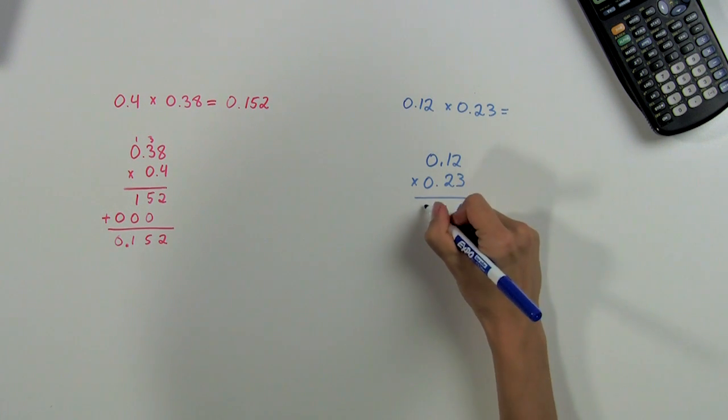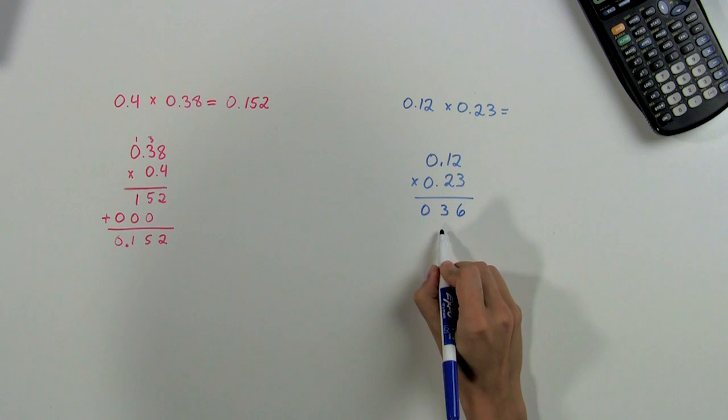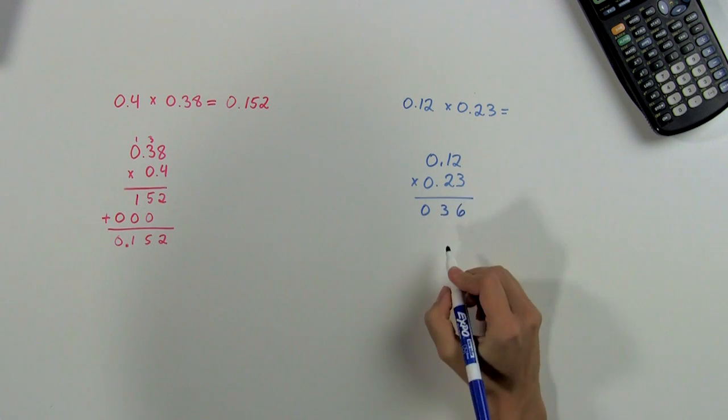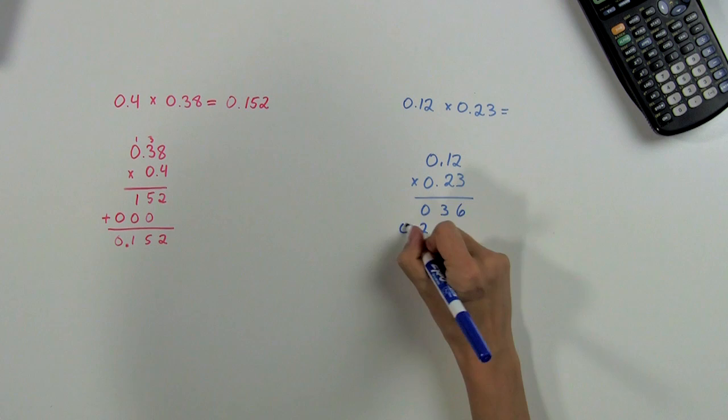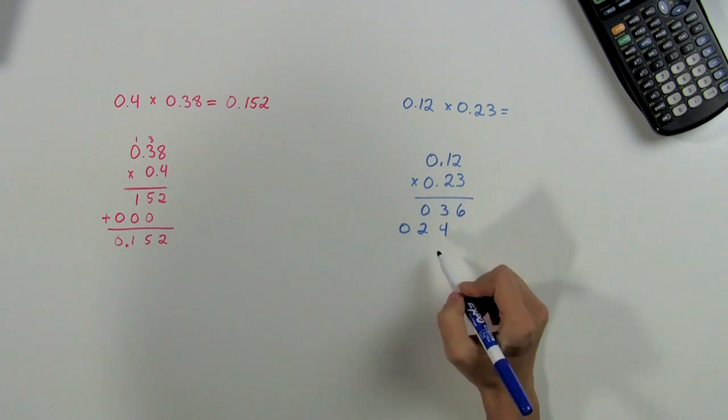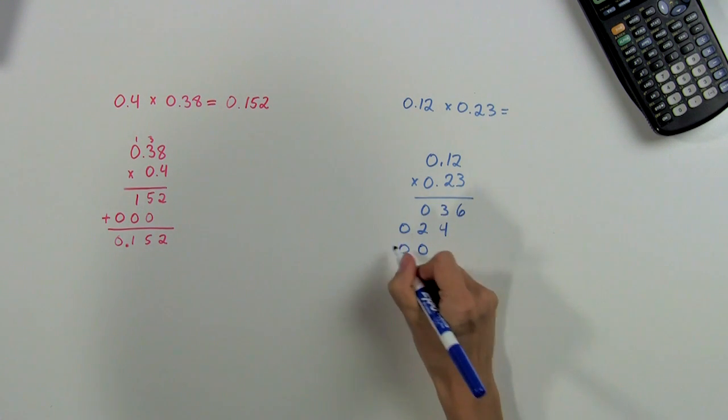Then we shift one place to the left and multiply the 2 times the top row and get four, two, zero. And the last line is the 0 times the top row, which gives us all zeros.